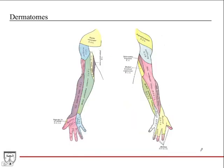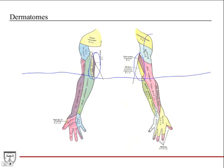Regarding dermatomes of the arm: the medial brachial cutaneous nerve covers the medial side of the arm, and the axillary nerve importantly covers the lateral aspect of the arm.